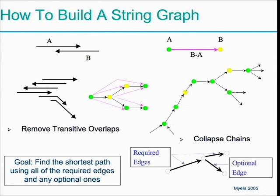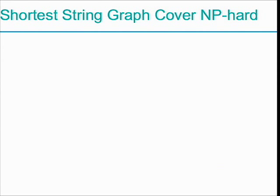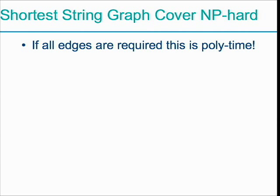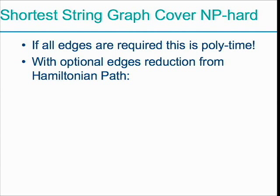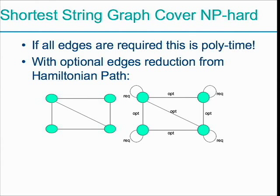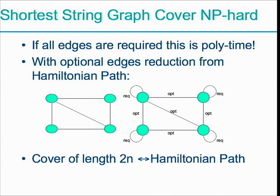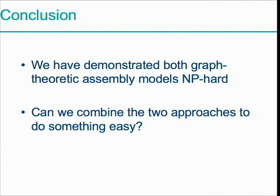Gene Myers' formulation aimed to find the shortest path using all required edges and any optional ones, but not necessarily all of them. It turns out this is also NP-hard. If all edges are required, the problem is polynomial time — it's a Chinese Postman problem. But with optional edges, there's a simple reduction from Hamiltonian path: take a graph, make required edges at every node, make all other edges optional, and a cover of length 2n corresponds exactly to a Hamiltonian path.